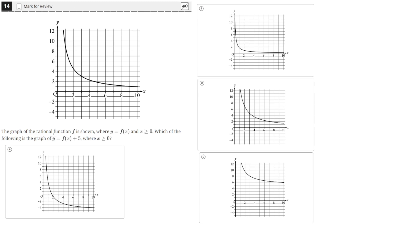The graph of the rational function f is shown, where y equals f of x. This graph here is f of x, and x is greater than or equal to 0. Which of the following is the graph of y equals f of x plus 5, where x is greater than or equal to 0? We need to see which one of these graphs, A through D, is the graph of f of x translated up by 5 units.